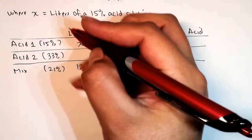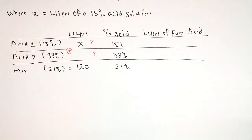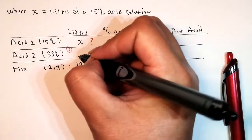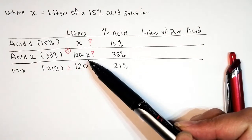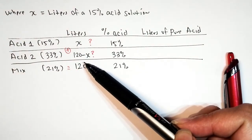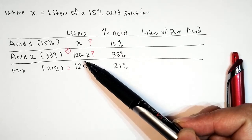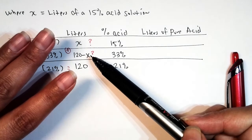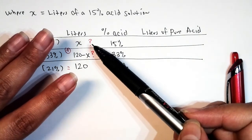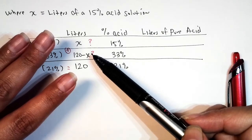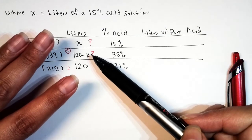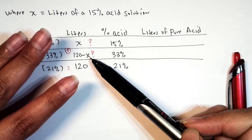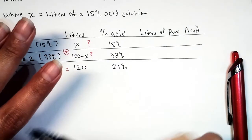We know that when we add the two quantities the sum should give us 120. So if I have x liters in the first, to see how much I have in the other, we're going to subtract. For example: if we had 3 liters in the first, how much in the second? You'd say 117, because we did 120 minus 3. So in this case, to see how much we have of the 33%, we take 120 minus x.